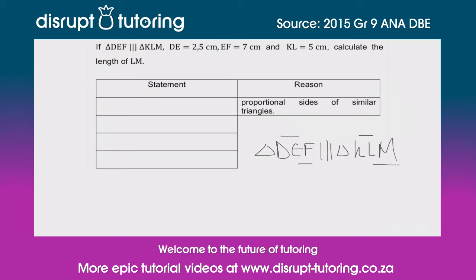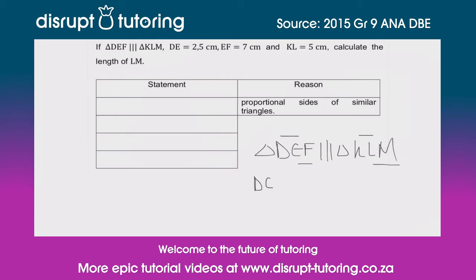We can see that DE over KL is going to give us the same ratio as EF over LM — because they've told us the two triangles are similar. So we're going to use DE over KL equal to EF over LM. That's because the two triangles are similar.